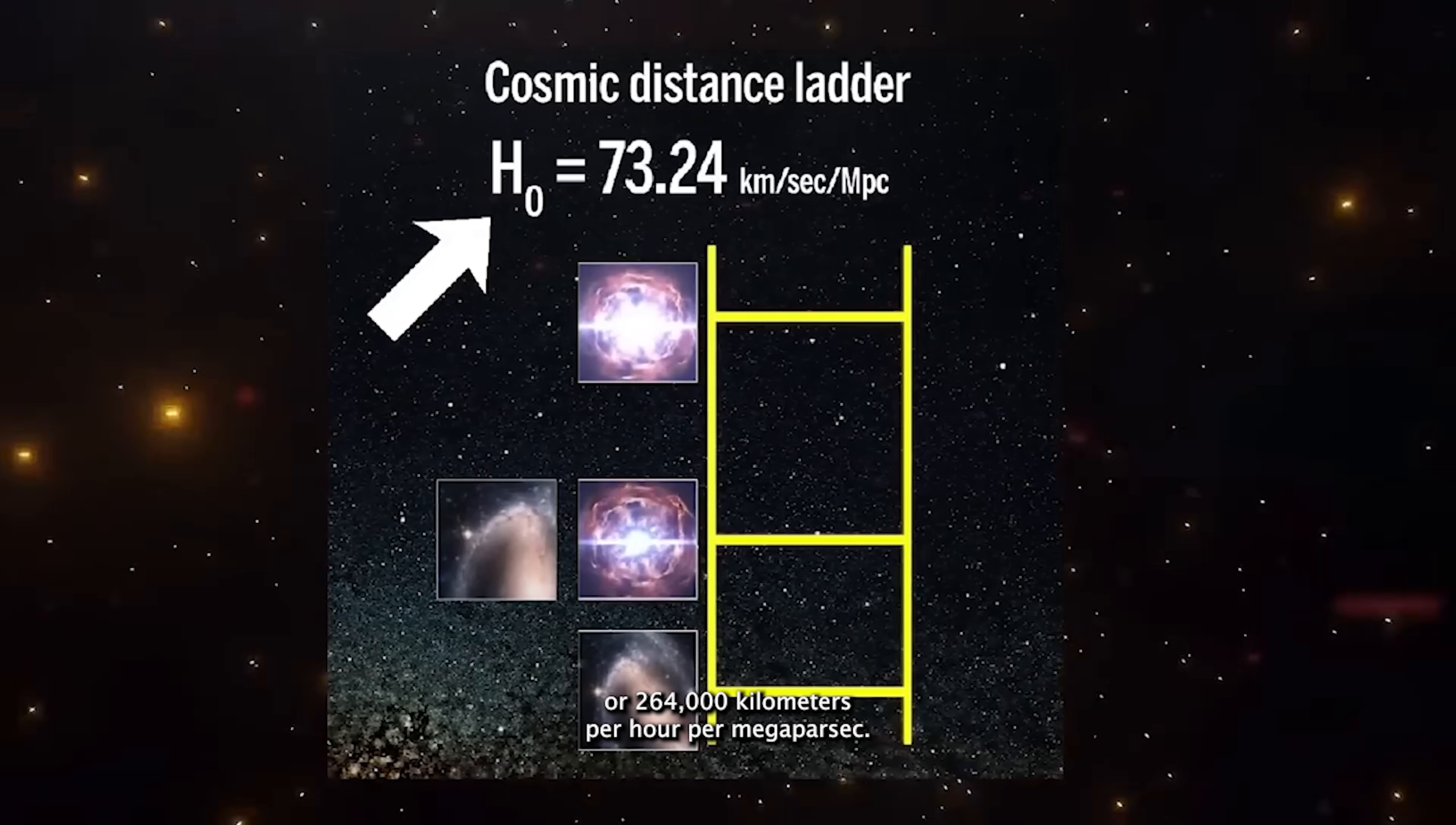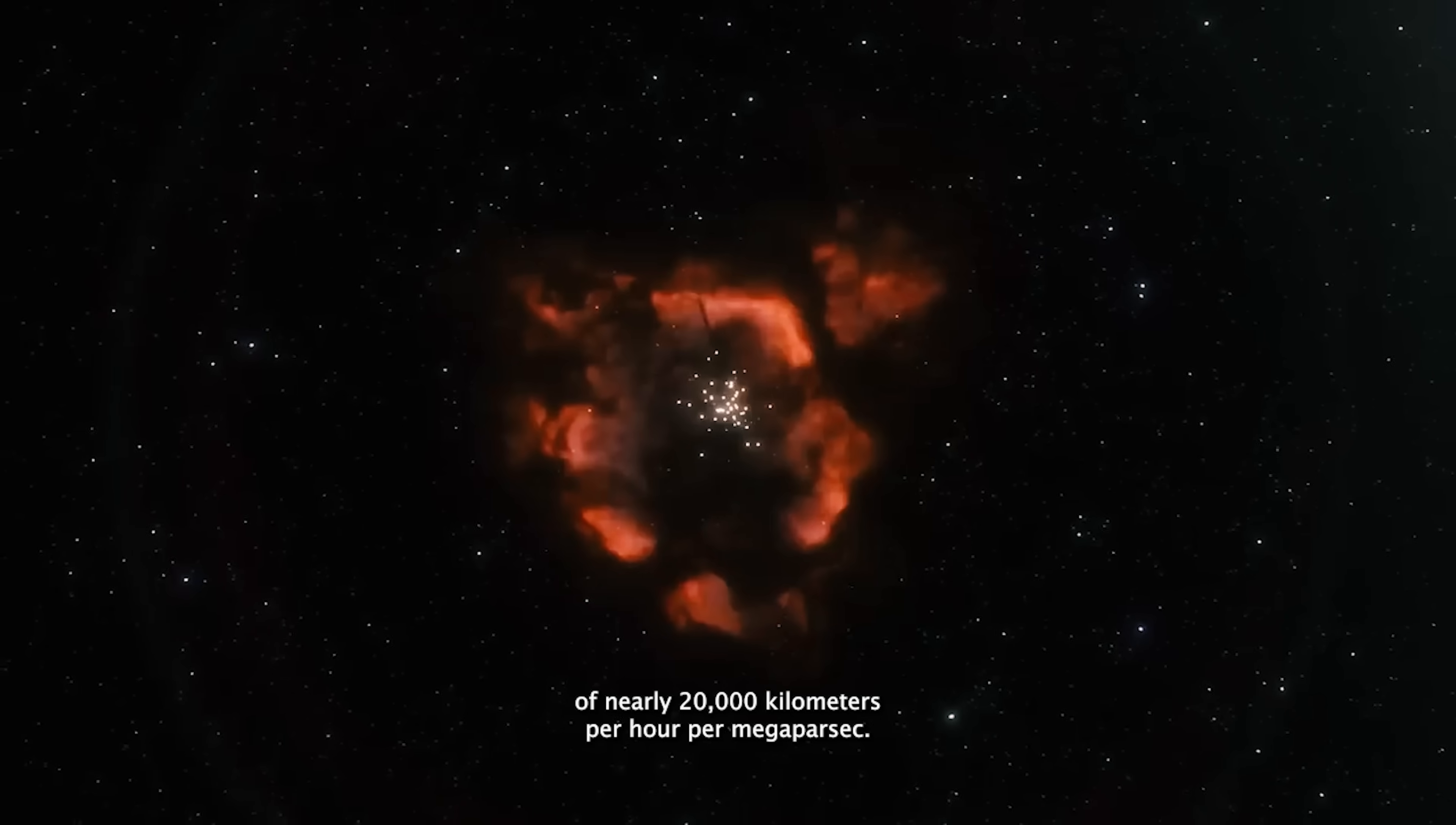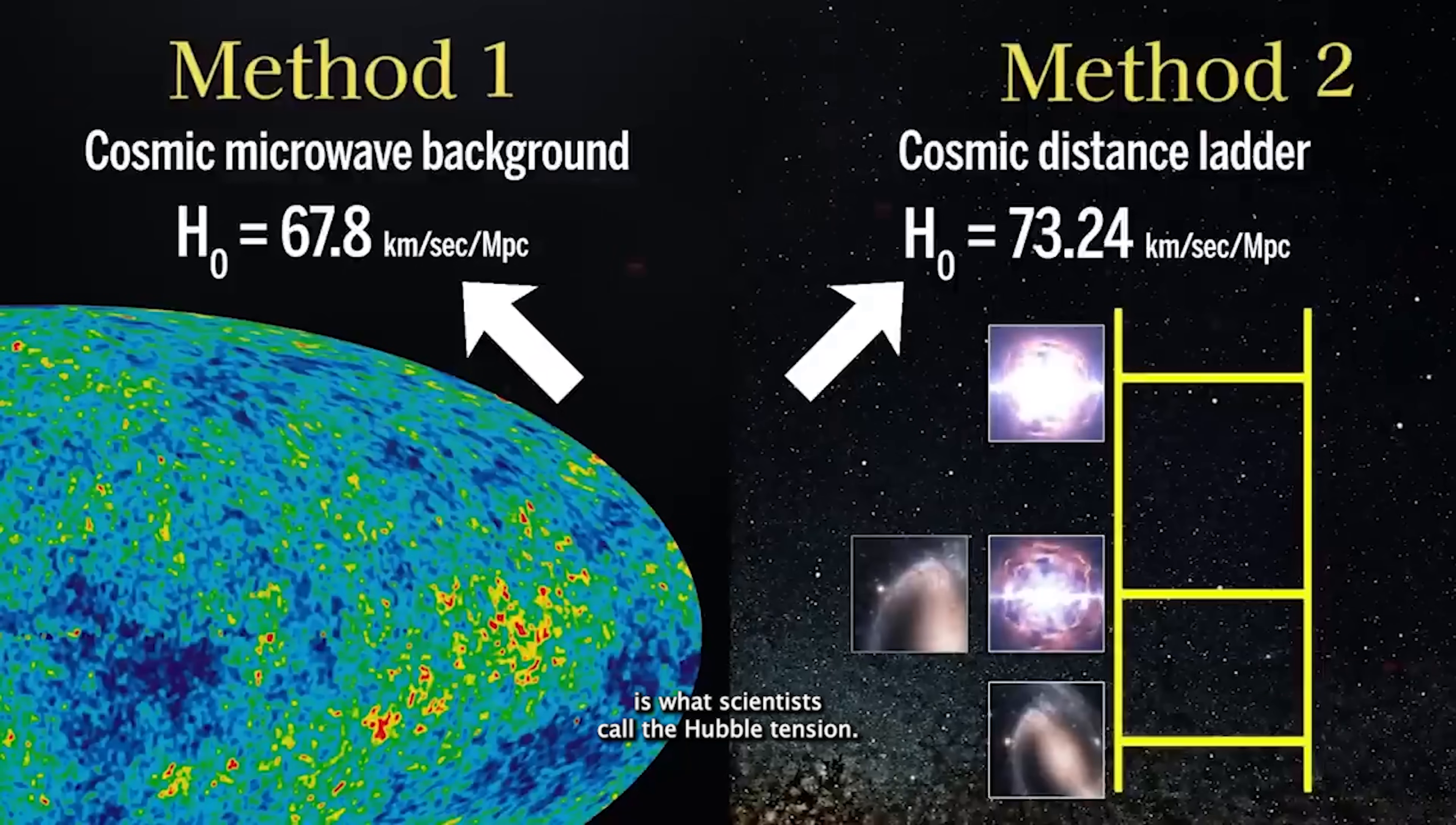Or 264,000 km per hour per megaparsec. That's a difference of nearly 20,000 km per hour per megaparsec compared to the theoretical prediction. This significant gap is what scientists call the Hubble tension.